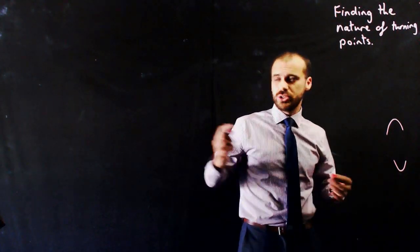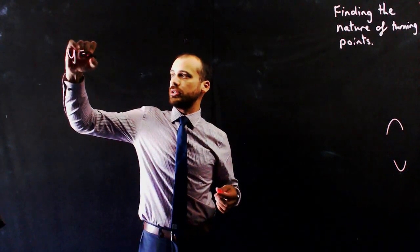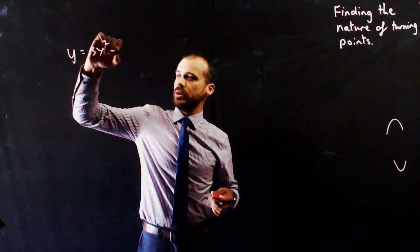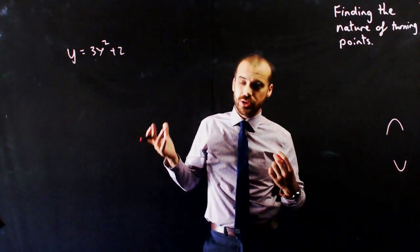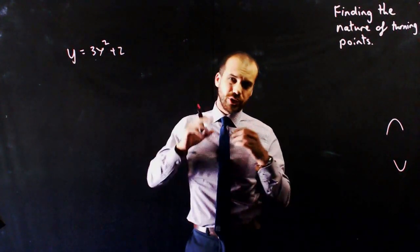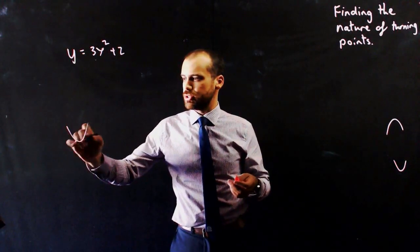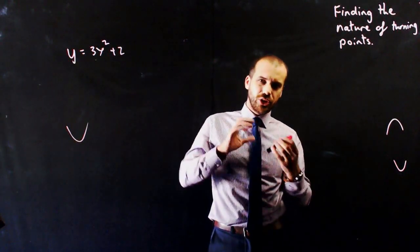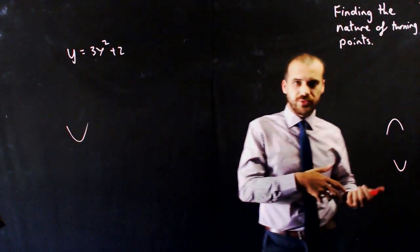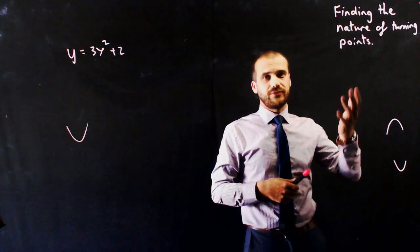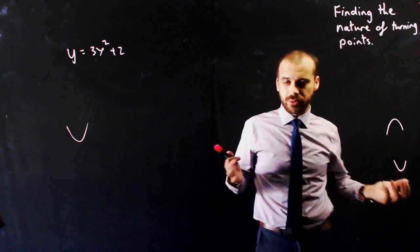Now generally when teachers teach this, they usually teach it using an equation that you're fairly familiar with, like 3x² plus 2. But if I show that to you, you're going to know straight away, oh that's a parabola, it's a smiley face, so the turning point is a minimum. So I'm going to show you an equation you've never seen before, which means that you'll have to find the nature of the turning points because you've got no idea what it looks like.